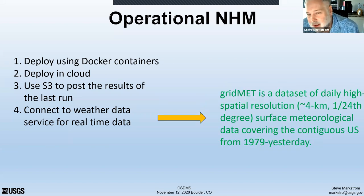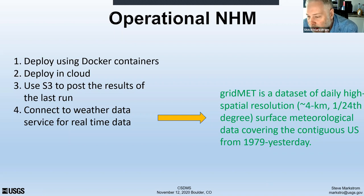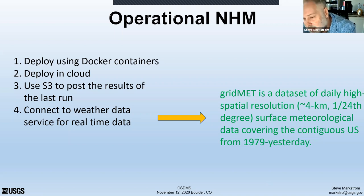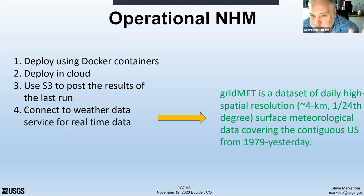Finally, this operational version of the model connects to a web data service called GridMet — a relatively high-resolution weather server that provides temperature, precipitation, humidity, relative humidity, and solar radiation in a near real-time setting. The data is available on a daily basis from 1979 through yesterday. So our model is driven with this near real-time weather service. These four things — Docker portability, nightly cloud runs, S3 storage, and GridMet connectivity — are what we call 'operational.'